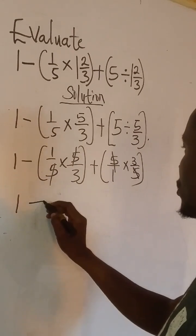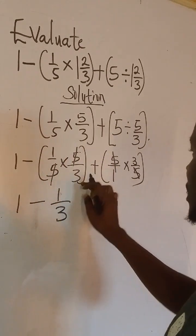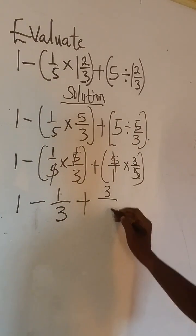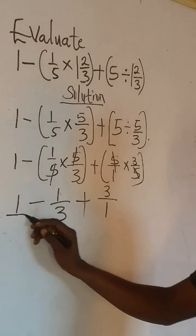So we have 1 minus 1 over 3. 1 times 1 is 1, 1 times 3 is 3 plus 1 times 1 is 3 over 1. So from here we make this over 1.